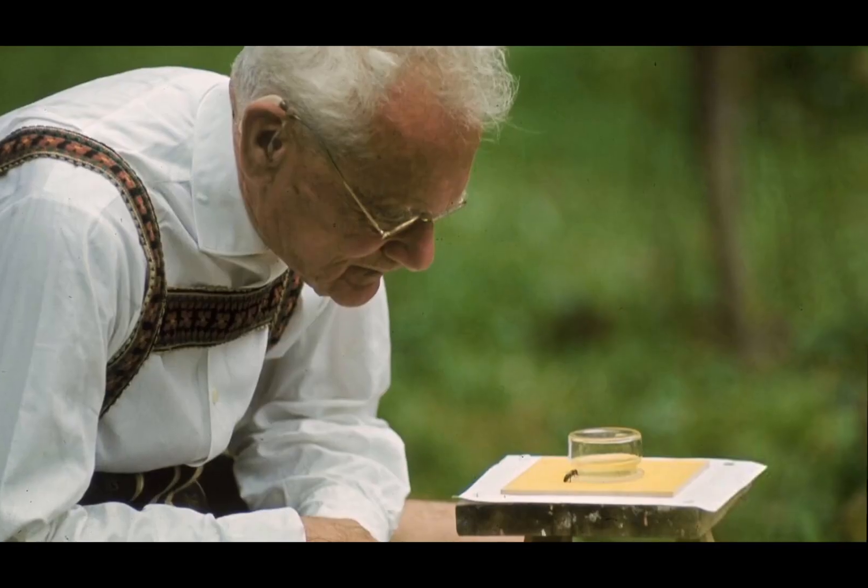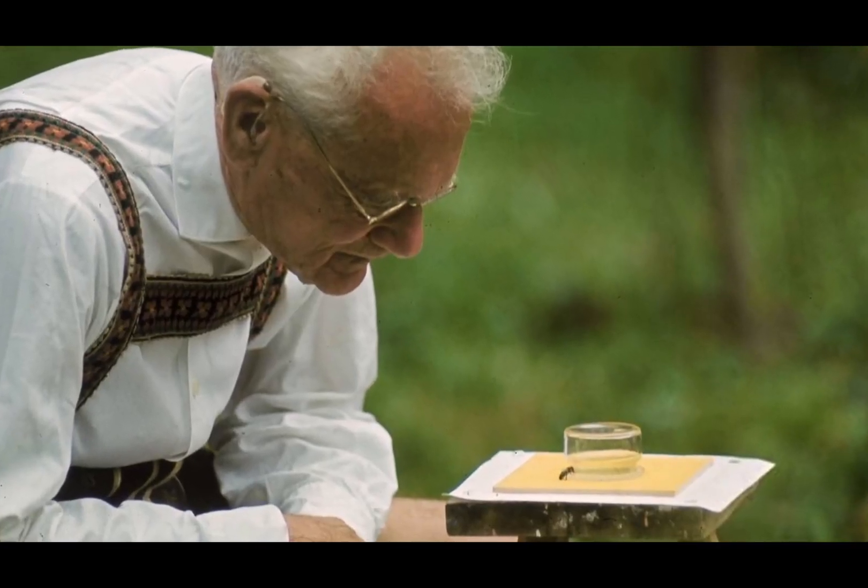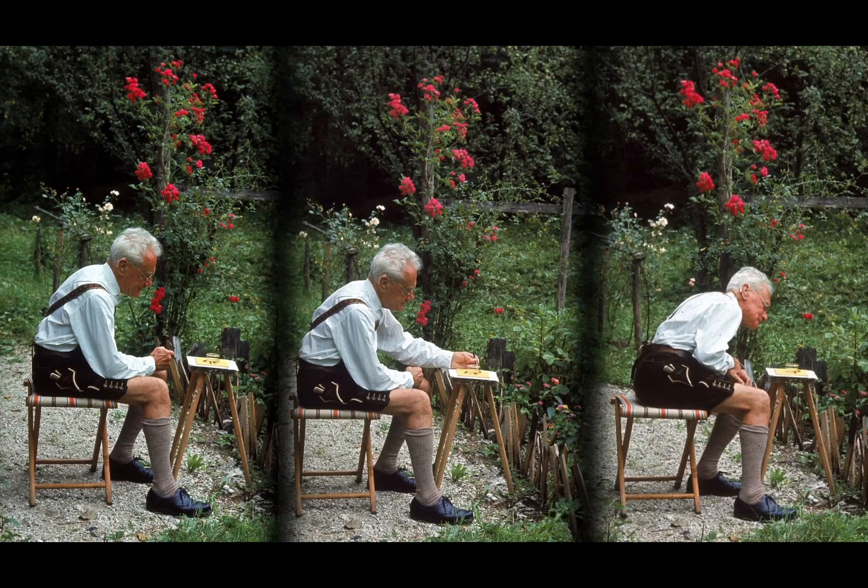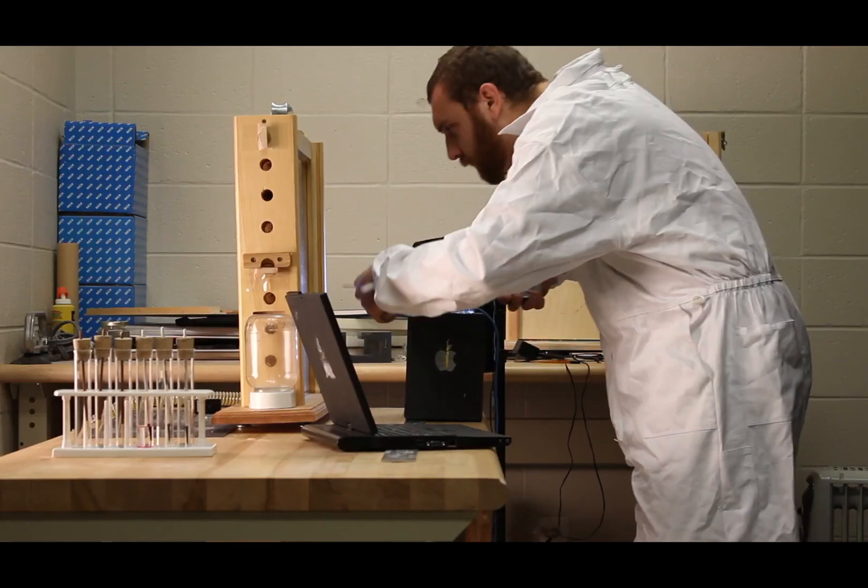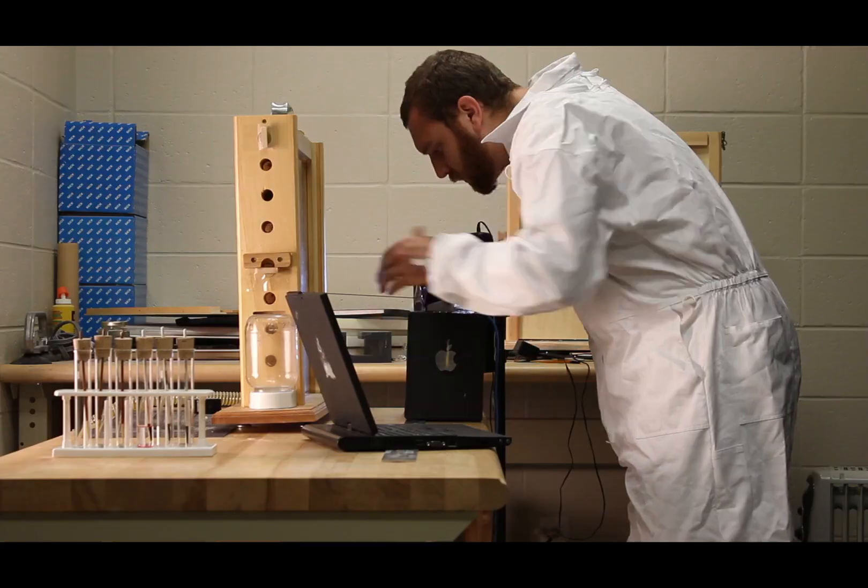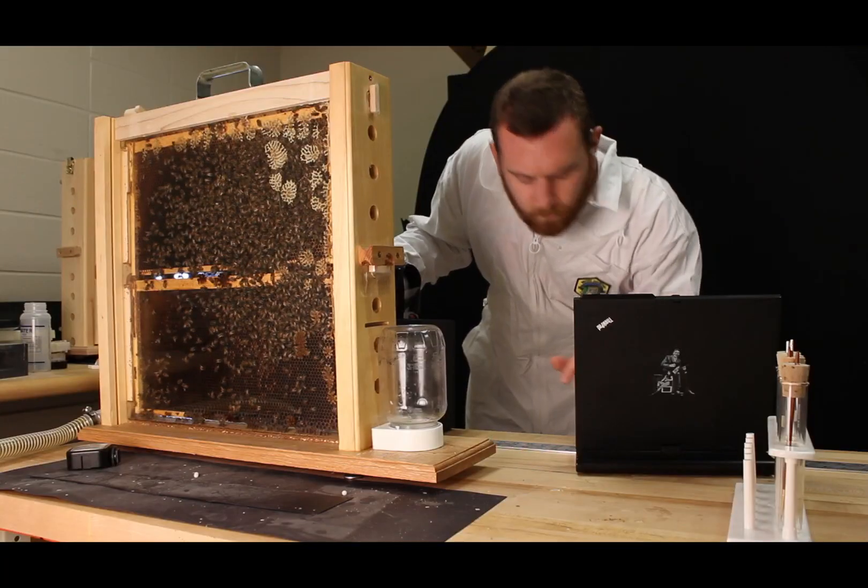To answer this question, Austrian biologist Karl von Frisch devised a series of experiments in the 1940s. Researchers at Georgia Tech have reproduced von Frisch's pioneering experiments using a modern observation hive.